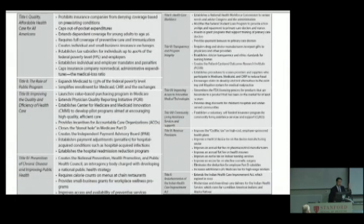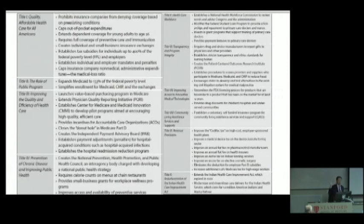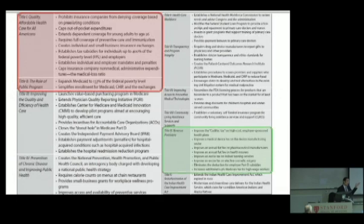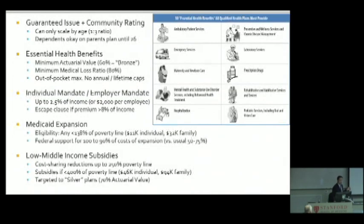They encouraged doctors going to primary care, closed the donut hole in Medicare Part D prescriptions, more quality reporting and transparency, accountable care organizations — experiments like this to try to save some money. You don't hear about any of this. Most of this stuff is not controversial. Almost all the talk you hear about is just about how health insurance works and how it's going to be paid for. So let's dig into the major insurance impacts of the ACA.